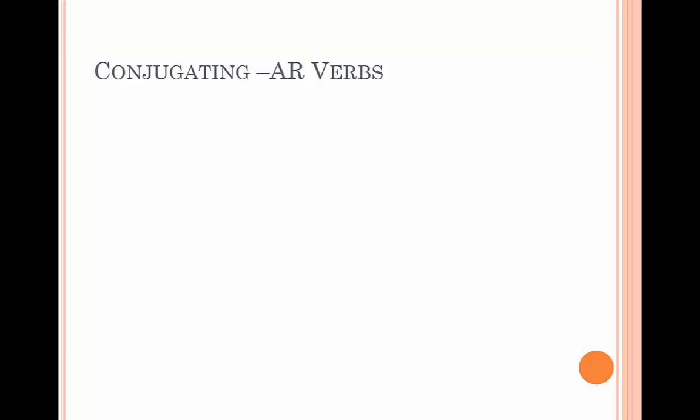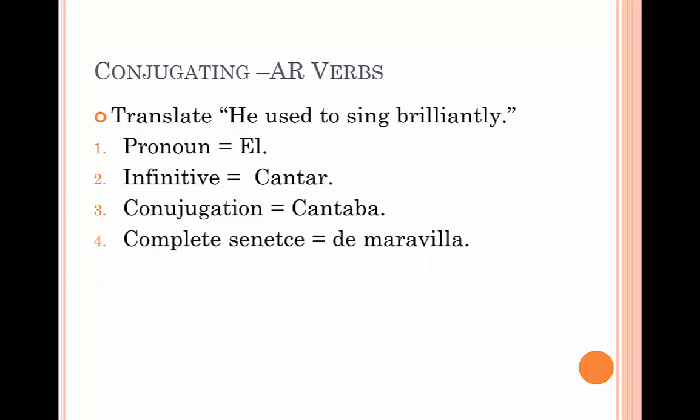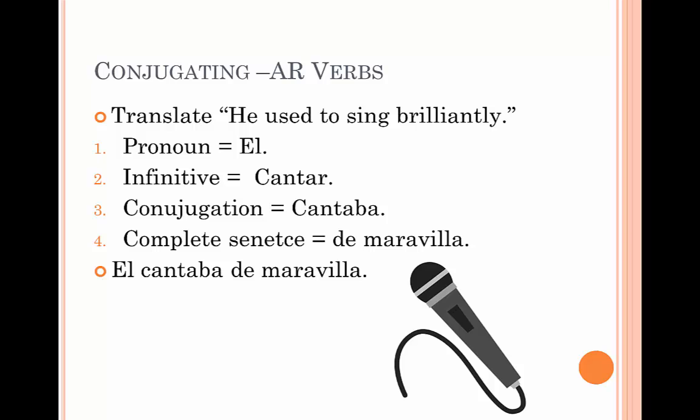Conjugating AR verbs - Examples. We're going to now translate 'he used to sing brilliantly.' The pronoun we have to use is él, and the infinitive for the word sing is cantar. We then conjugate this infinitive to get cantaba, and completing the sentence, de maravilla. Finishing it off, we get él cantaba de maravilla.